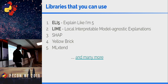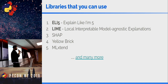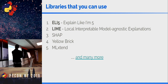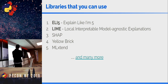Due to time constraints, I'm going to talk about ELI5 and LIME. ELI5 stands for 'Explain Like I'm 5' — the concept is to explain something simply enough that a five-year-old can understand it. The second technique is LIME: Local Interpretable Model-Agnostic Explanations. Other libraries you can use include SHAP (SHapley Additive exPlanations), Yellowbrick, and MLextend. There are many more listed at the link provided.